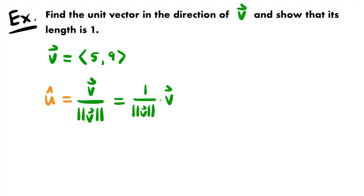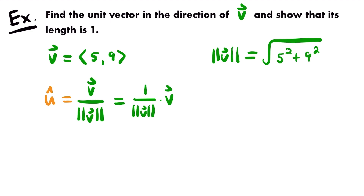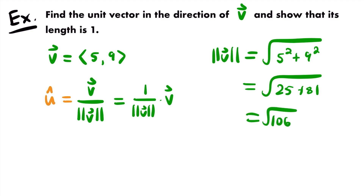The first thing you want to do is find the magnitude of vector v. The magnitude of vector v is going to be equal to the square root of the sum of the components squared. So that will be 5 squared plus 9 squared. Simplifying, 5 squared is 25 and 9 squared is 81, so this is equal to the square root of 25 plus 81. And 25 plus 81 is 106, so this is equal to the square root of 106.